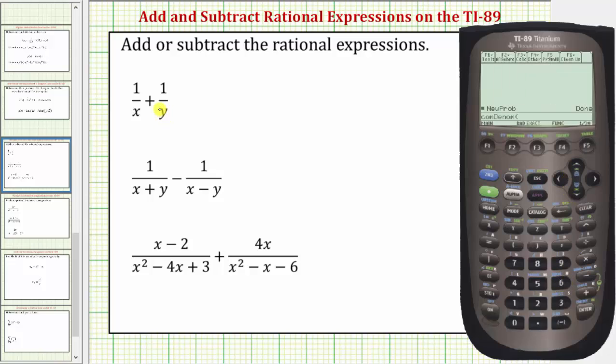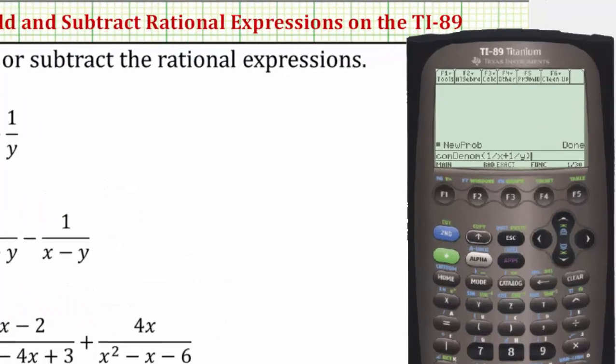Looking at the first sum, we can now enter one over x plus one over y. So we'd have one divided by x plus one divided by y. Notice how I made a mistake here, so I'll press the back arrow or backspace, then the y, close parenthesis, and enter.